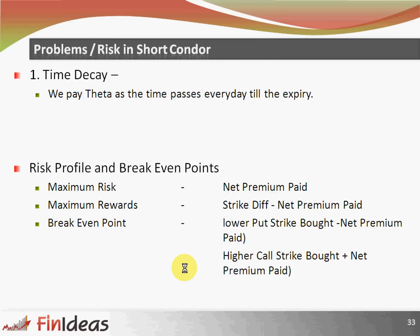Problem or risk in a short condor: time decay. We eventually pay premium, so we pay theta as time passes every day till expiry. If there is no movement and time is passing, we will pay theta every day — this is the risk we carry in a short condor. Risk profile and break-even points: maximum risk is the net premium paid. Maximum reward is strike price difference minus net premium paid. We have two break-even points: the lower break-even is the lower put strike bought minus the net premium paid, and the higher break-even is the higher call strike bought plus the net premium paid.